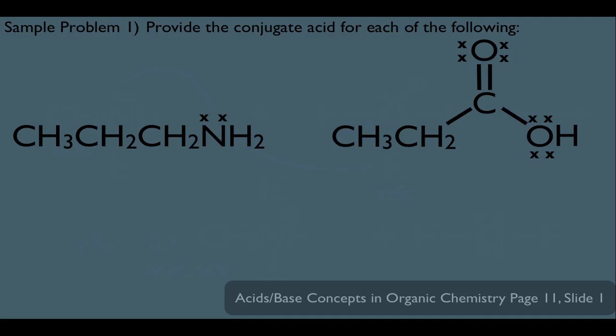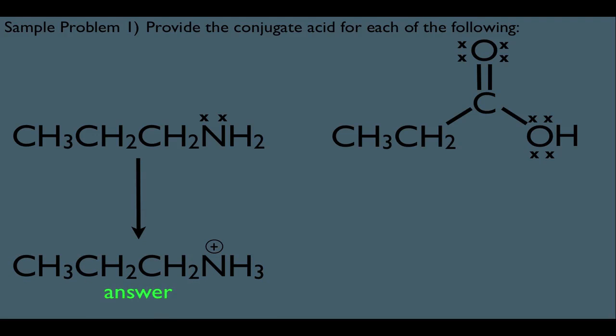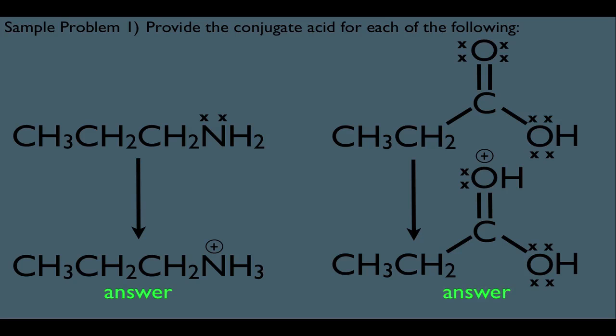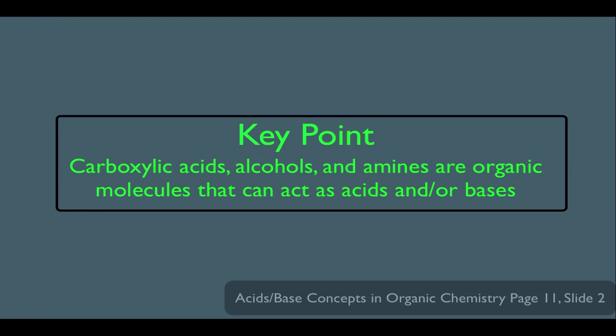Let's look at a sample problem: provide the conjugate acid for each of the following. For the first molecule, which is an amine, to create its conjugate acid we add an H to the nitrogen, giving us NH₃⁺ — meaning the nitrogen has a positive formal charge. For the carboxylic acid on the right, the H adds to the oxygen involved in the double bond, giving us the conjugate acid. Key point: carboxylic acids, alcohols, and amines are organic molecules that can act as acids or bases.